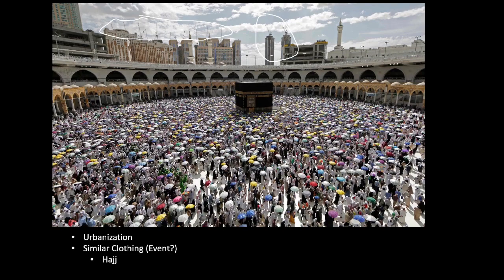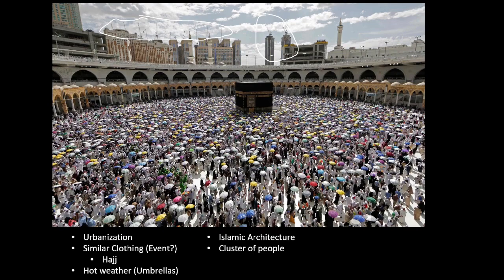This is actually the Hajj, where people go to this place for Islam — it's one of the pillars of Islam. There's hot weather, which is reflected by the umbrellas, and the sky looks hot. There's a large cluster of people, signifying a major event. There is also Islamic architecture in the image, reflecting the religion. This is Mecca, Saudi Arabia, where people go on the Hajj. Islam is prominent in the Middle East — that's where its hearth is, in Saudi Arabia, which is why Mecca is so important. This is a shrine, and the pillars of Islam require Muslims to go to Mecca at least once in their lives.